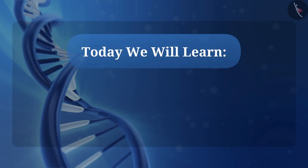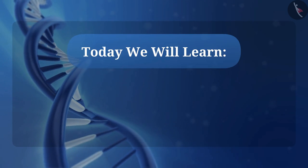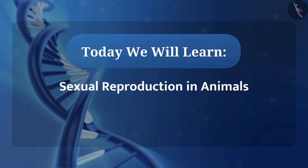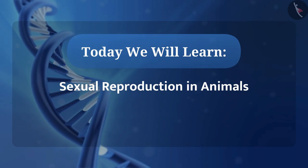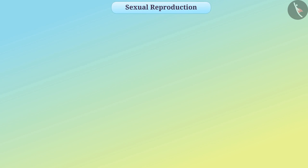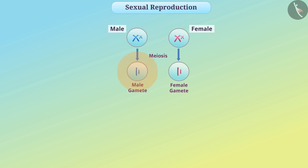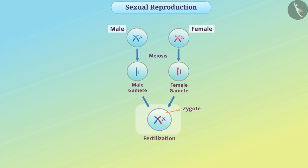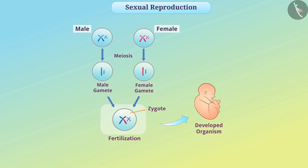Today we will learn about sexual reproduction in animals. We know that two parents participate in sexual reproduction. During sexual reproduction, the male germ cell is fused with the female germ cell to produce a zygote and develops into a new organism.